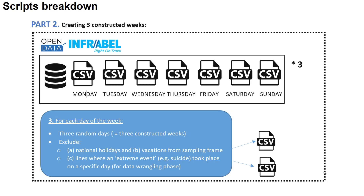Now for the second part: I will load the entire 2019 data into Python and construct three random weeks from these 2019 data files. I will exclude national holidays and vacations from the sampling frame. And I will potentially — this is something for the data wrangling phase — exclude extreme events such as suicides or a strike that took place on a specific day.